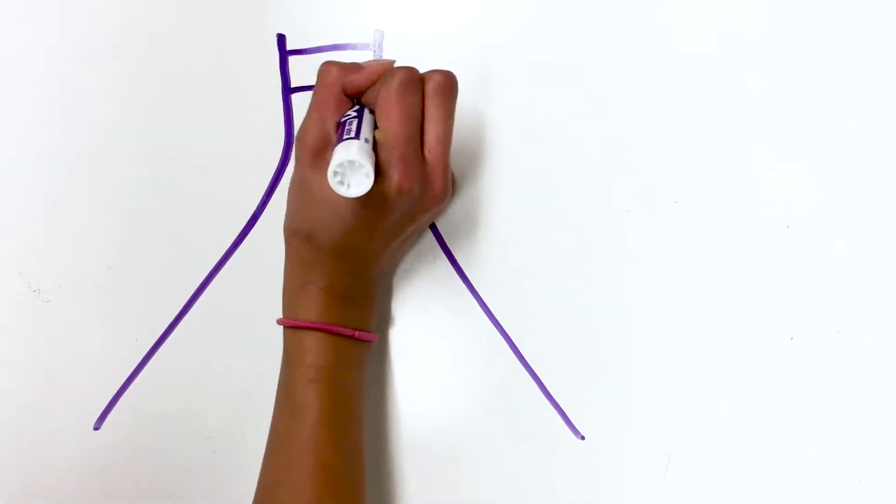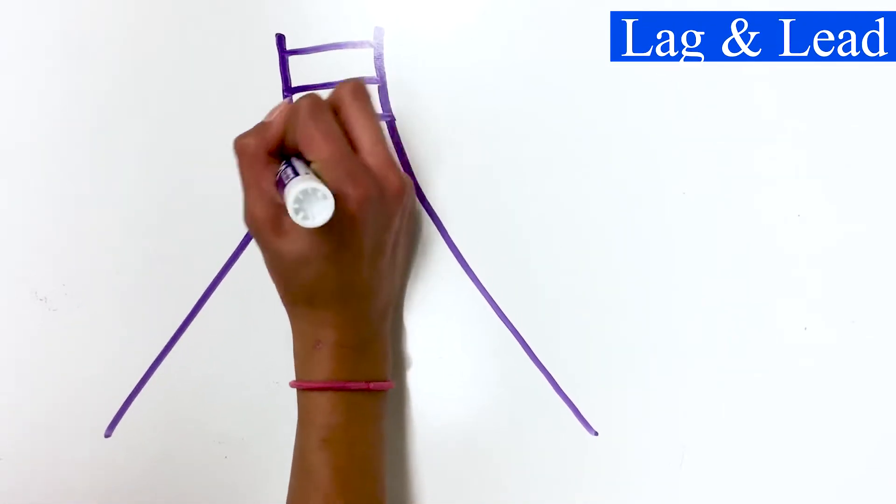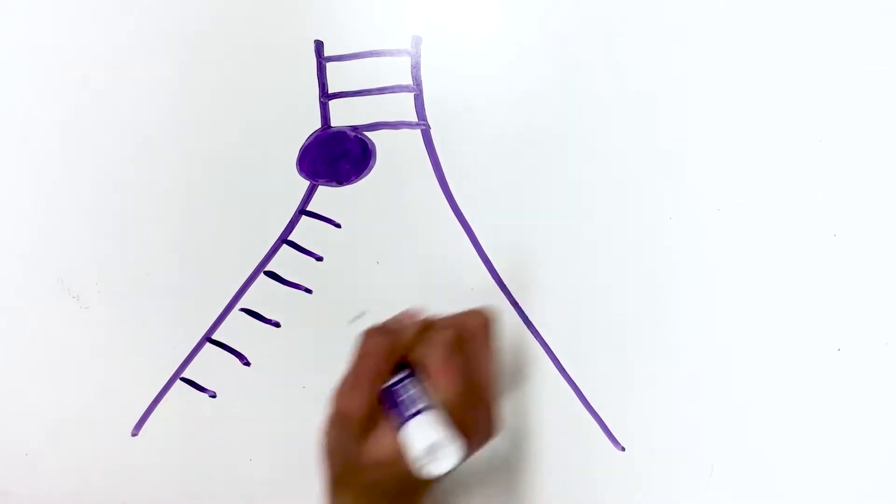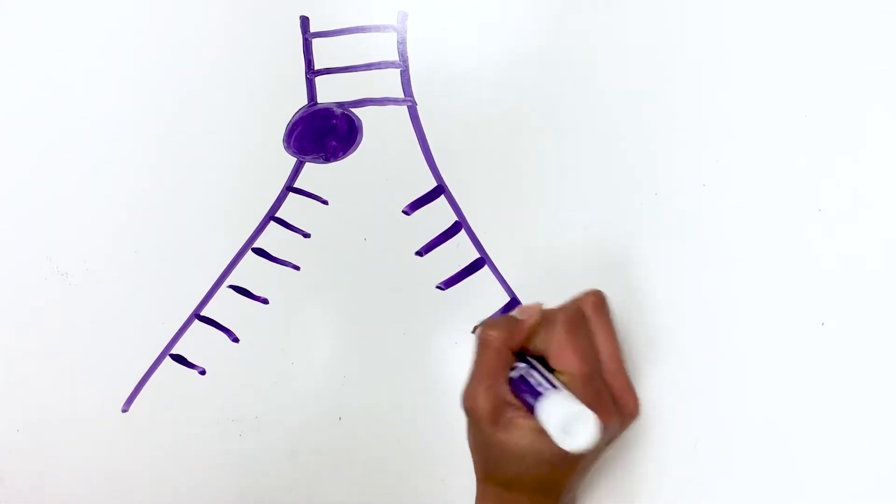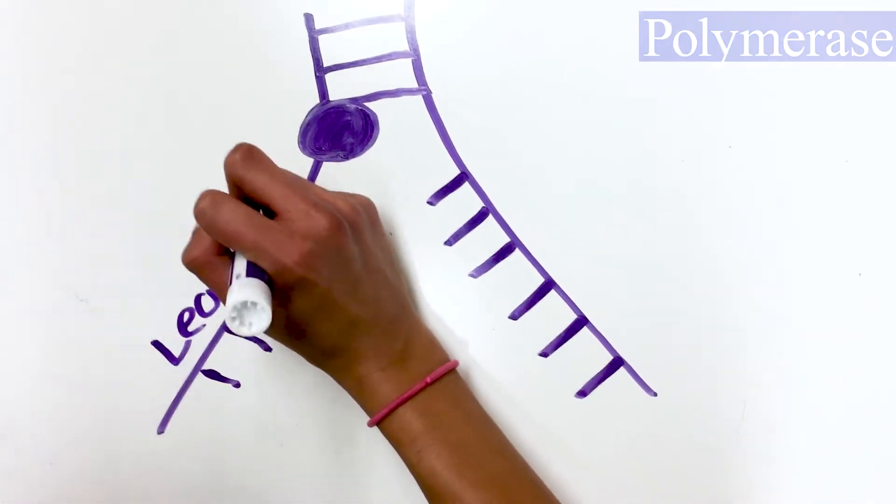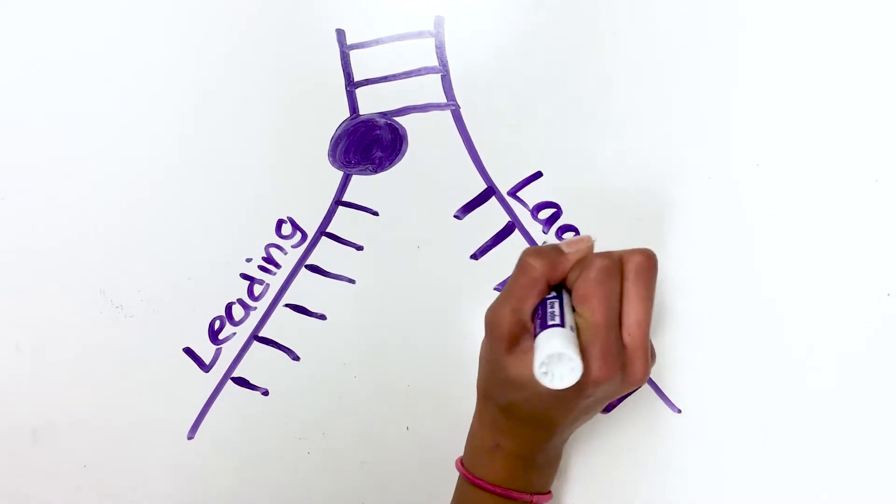This creates two strands: the lagging strand and the leading strand. The leading strand runs from 3' to 5' towards the replication fork. The DNA polymerase then adds complementary base pairs from 5' to 3' continuously.